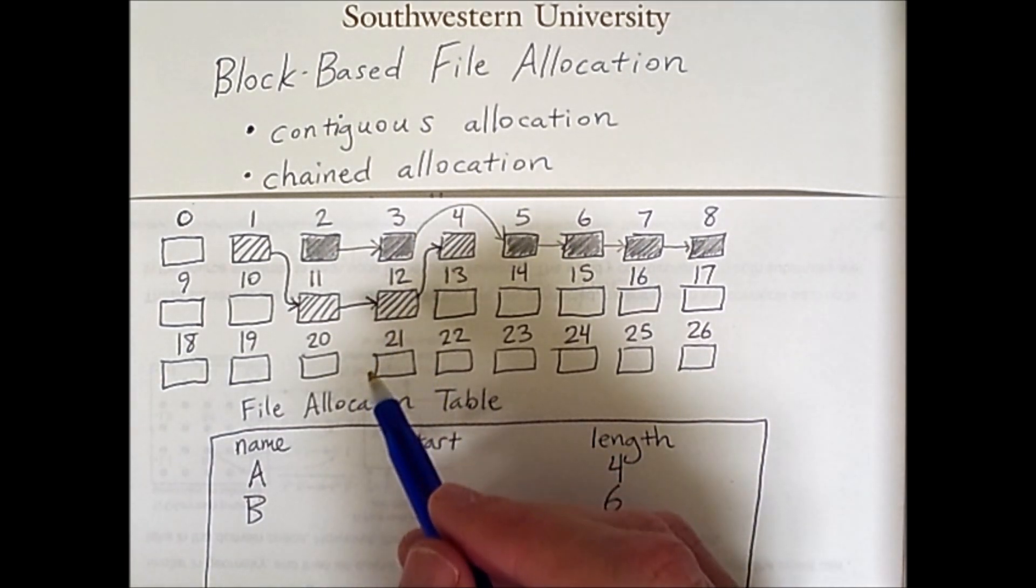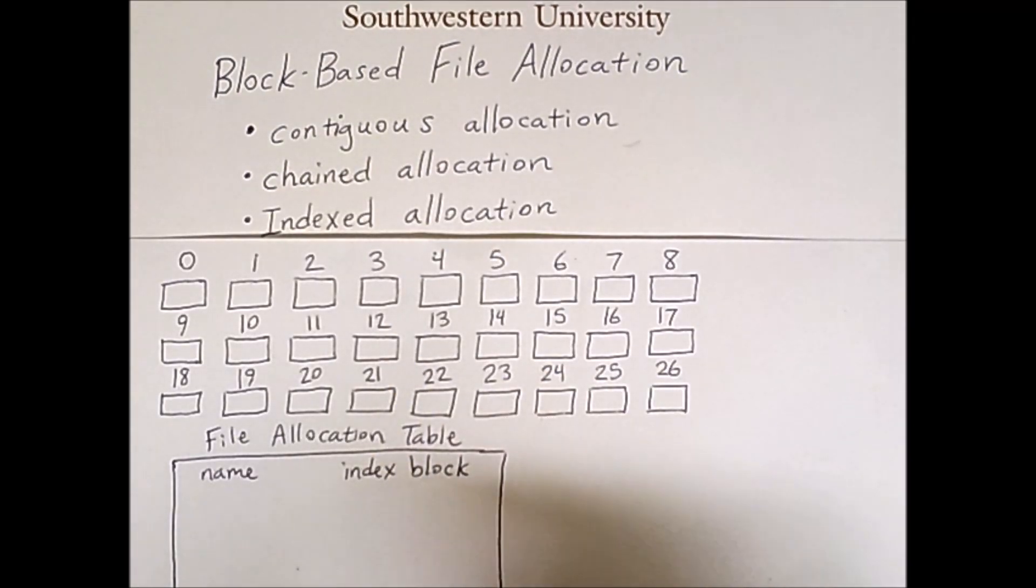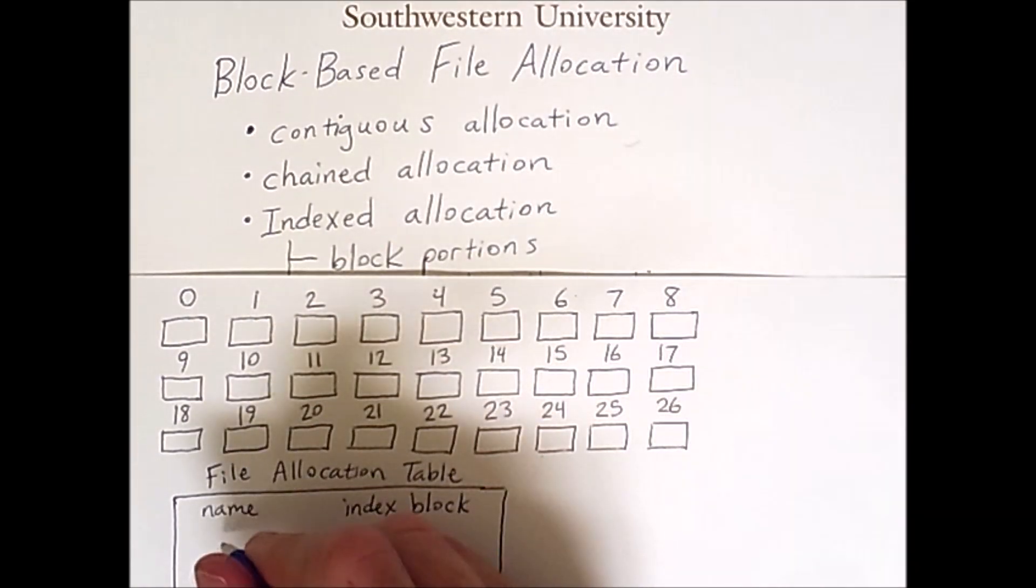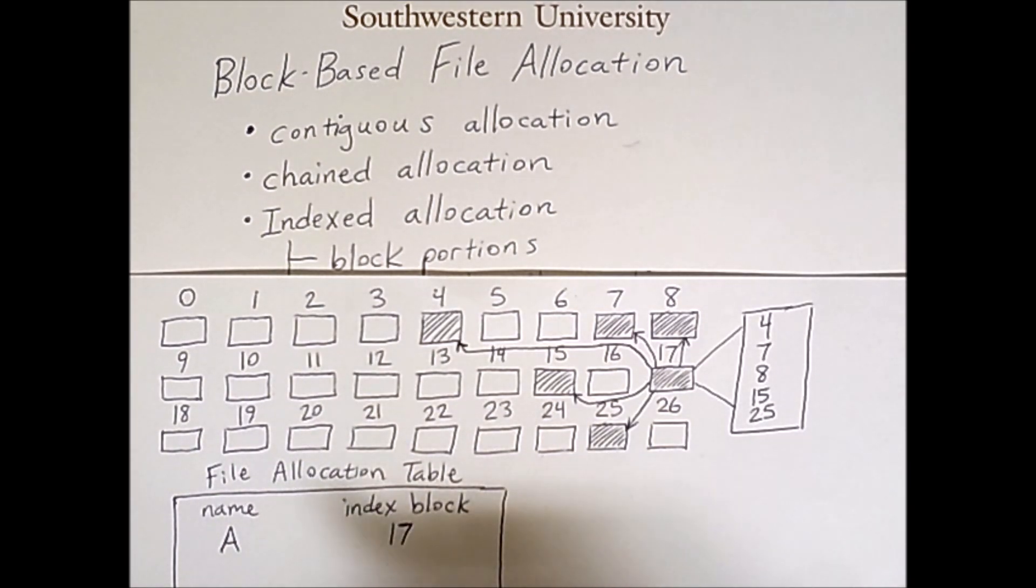Well one approach to address this problem is index allocation. In indexed allocation instead of storing pointers in each block to the next block in the sequence we have special index blocks that store links to all blocks associated with the file. Now there are actually two different forms of indexed allocation we'll be discussing. The first is block portions. So if I'm using indexed allocation with block portions and I want to create a file named A the result might look something like this.